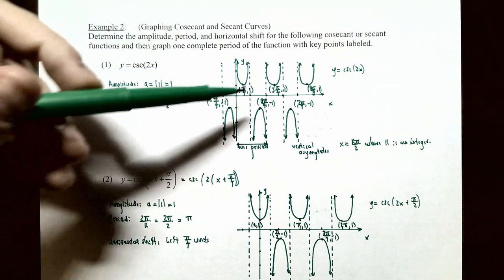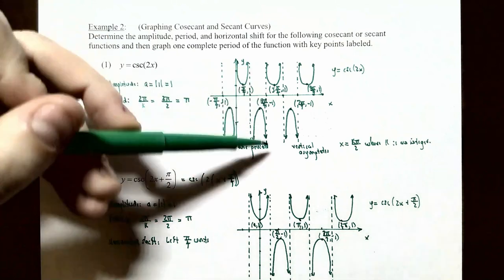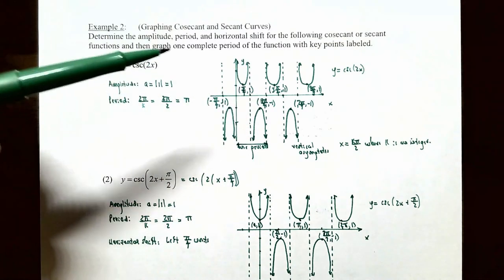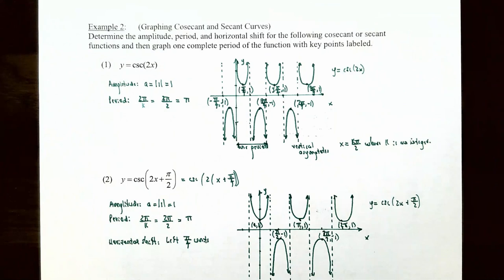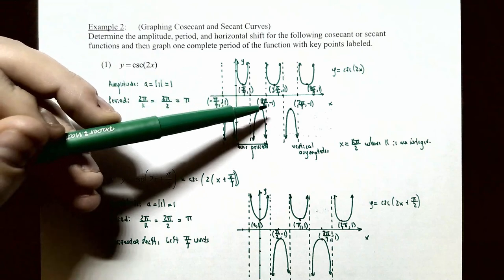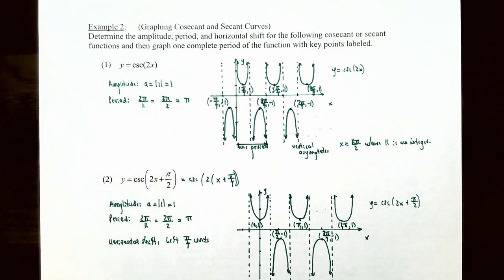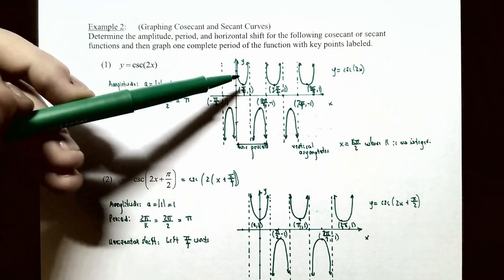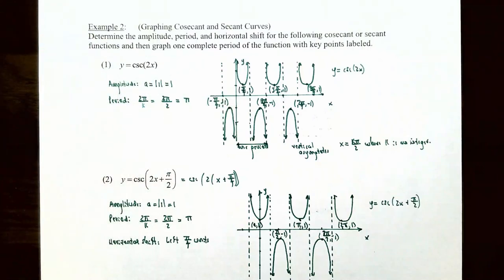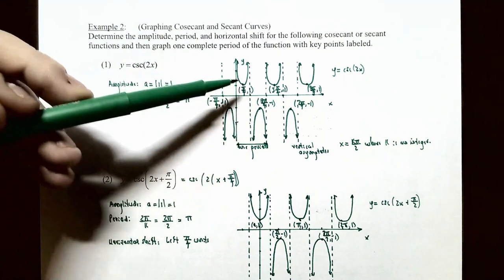Between x equals π/2 and x equals π, the graph is below the x-axis. It decreases without bound on the right side of x equals π/2, decreases without bound on the left side of x equals π, and goes no higher than y equals negative 1 at x equals 3π/4. This completes one period of y equals cosecant of 2x, and the graph continues with the same pattern every π radians.